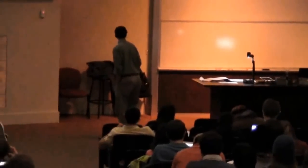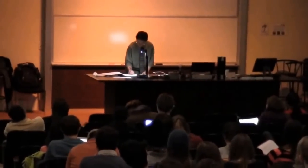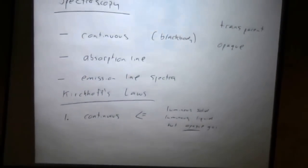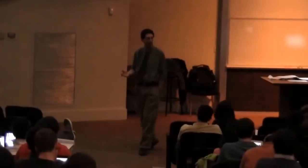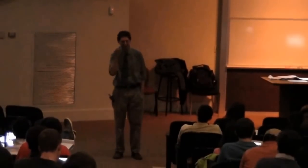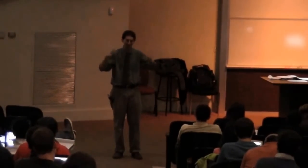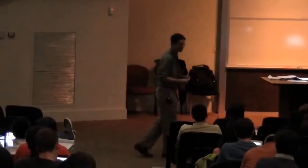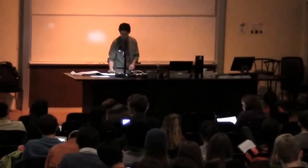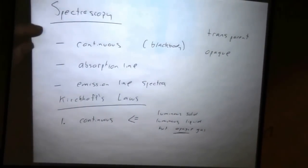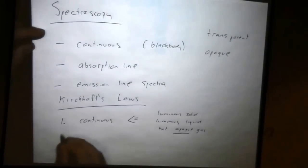And hot, opaque gas, and the opaque part is key. The gas in this room is not opaque. It's transparent. We can see through it. But you can imagine, stars are a great example of an opaque gas. You can't see through a star, though it's made of gas. So if the gas is dense enough and the right stuff is in there, it will not be transparent or be opaque. And if it's also hot, it glows, giving you a continuous spectra. So these three types, these three categories of objects will give you a continuous spectra.